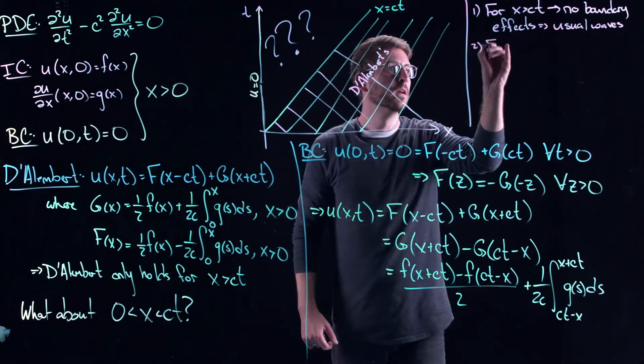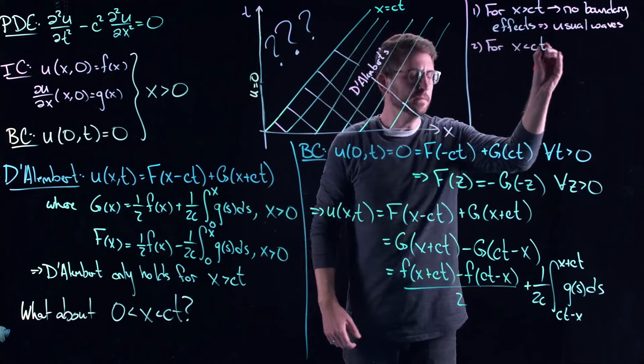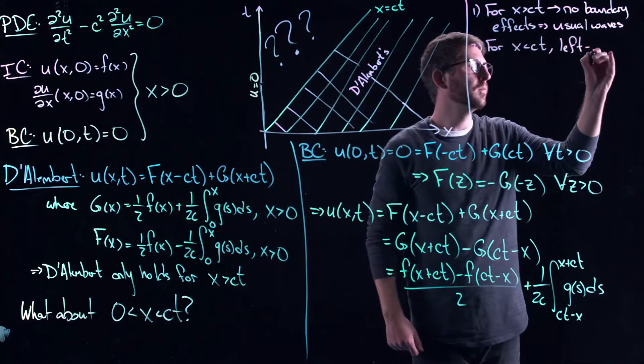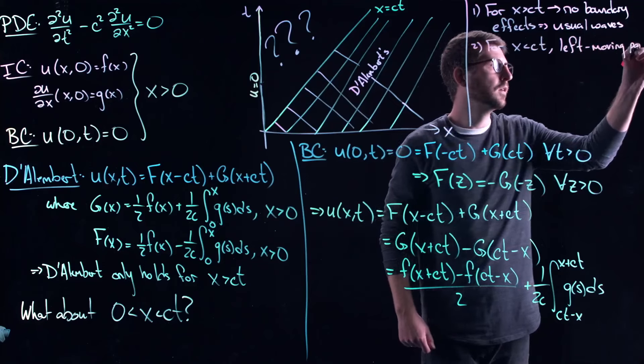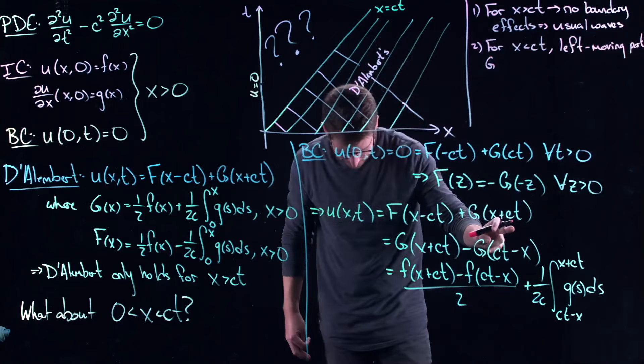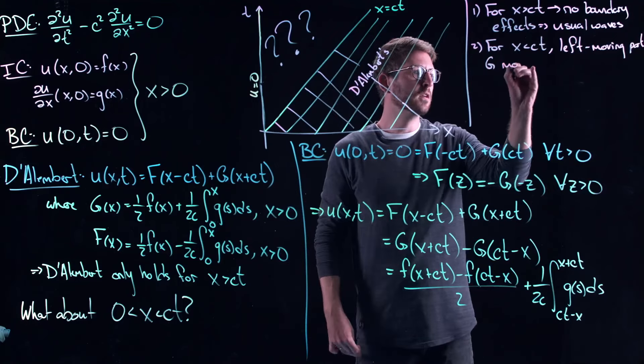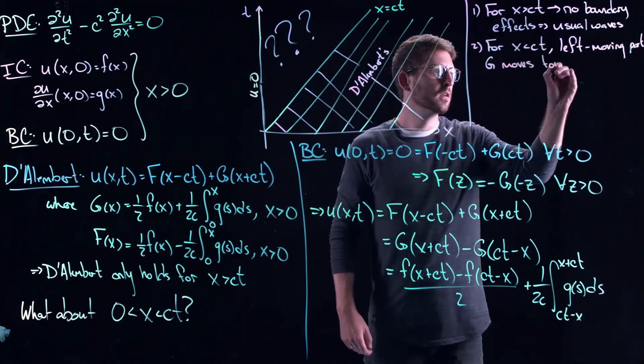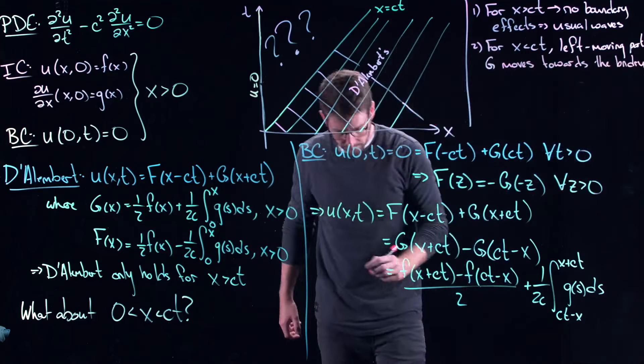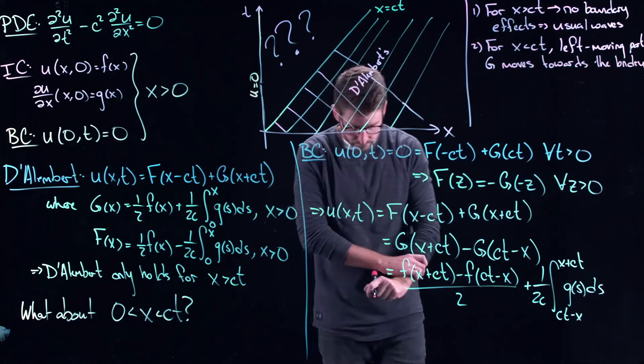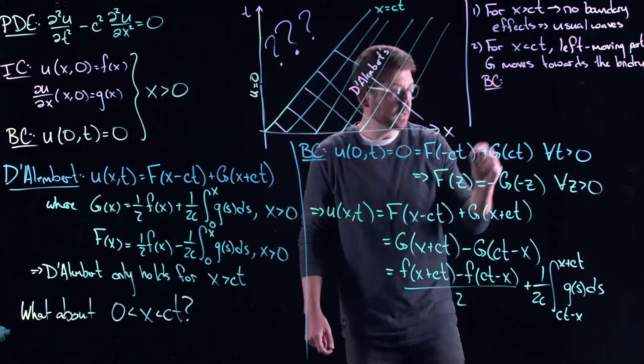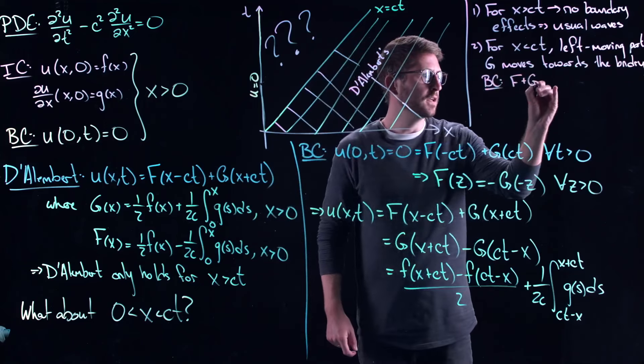Two. For x less than ct, the left moving part, which is the g, right? So g of x plus ct here, moves towards the boundary. And the boundary condition, which, remember, this was f plus g equals zero.